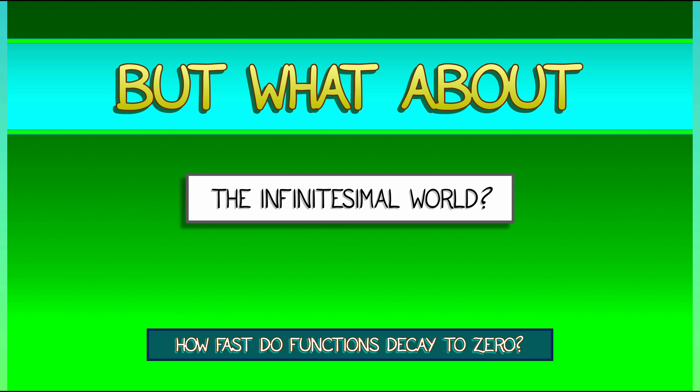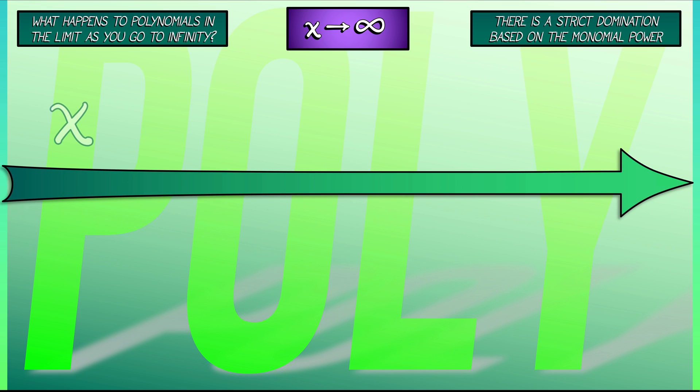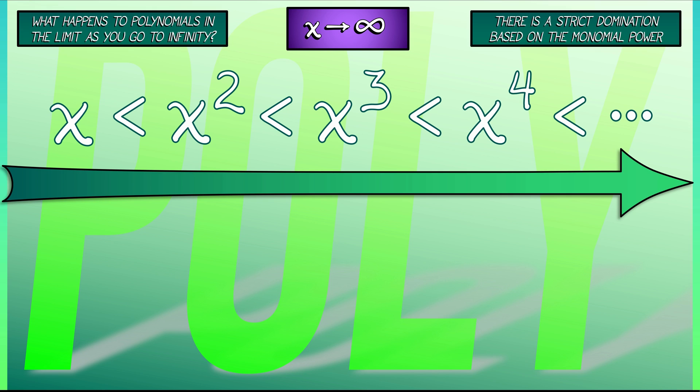Let's recall what happens when we're going to infinity. Recall the polynomial hierarchy. There's this strict domination based on the powers in the monomial terms. So, x is less than x squared, is less than x cubed, is less than x to the fourth. There's that hierarchy of polynomial growth.